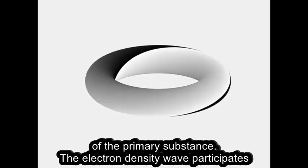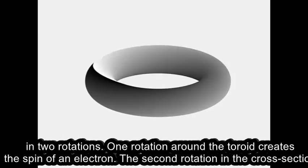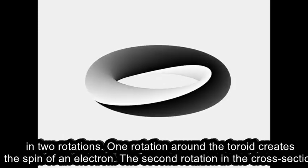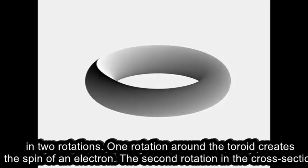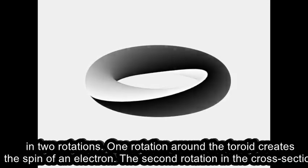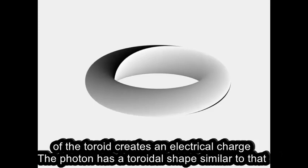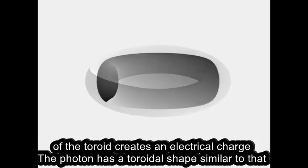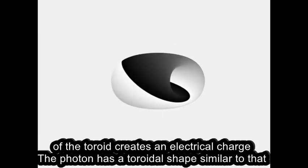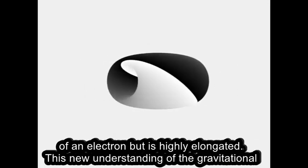The electron density wave participates in two rotations. One rotation around the toroid creates the spin of an electron. The second rotation in the cross-section of the toroid creates an electrical charge. The photon has a toroidal shape similar to that of an electron but is highly elongated.